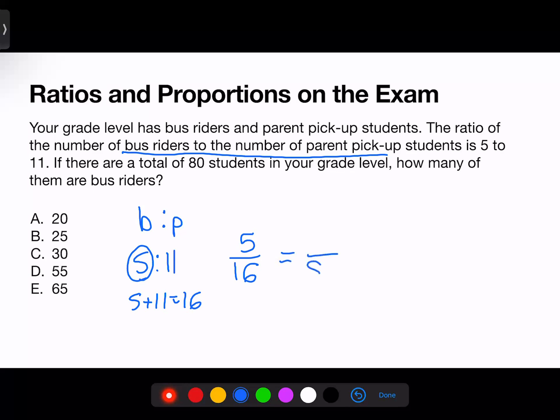We'll set our equals sign and write 80 here. Since we're trying to find the number of bus riders, we'll have to use X to solve. Now, we can cross multiply like we did last time. 80 times 5 when typed in the calculator is 400. Then 16 times X is 16X. Now, I can solve algebraically. To isolate X, I need to divide both sides by 16. That leaves X by itself. And 400 divided by 16 when typed in the calculator is 25. In a grade level with 80 students, we can expect 25 students to be bus riders.